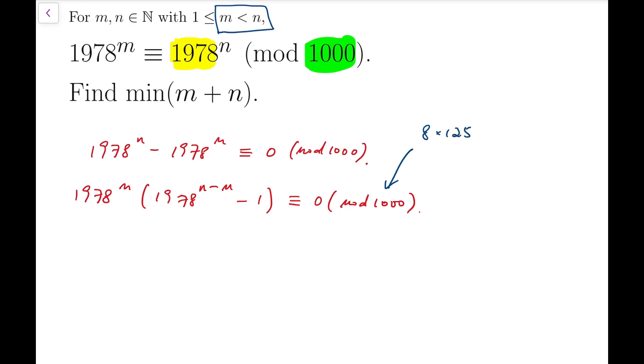Now notice that 1000 is just 8 times 125. And we know that this number, this power of 1978 will not contain any factor of 5. So this number must take up all the even factors.